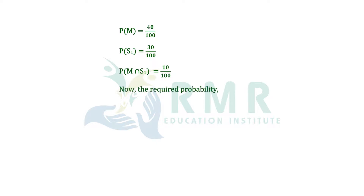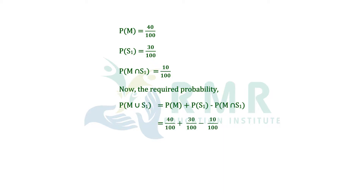The required probability is probability of M union S1 equal to probability of M plus probability of S1 minus probability of M intersection S1, which gives 40 by 100 plus 30 by 100 minus 10 by 100. After simplifying, we get 3 by 5.